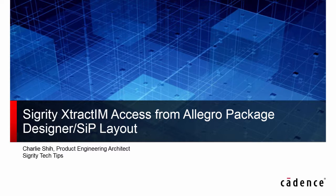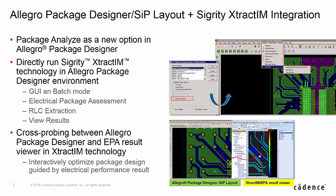In this video, we are going to introduce Sigurd E-Track IM access from Allegro Package Designer and SIP layout. Traditionally, a layout designer sent a package design to an electrical engineer to do SIP analysis for critical nets, waiting days to weeks to get a response for design changes. Now, starting from Allegro 17.2, layout designers can access Sigurd E-Track IM from APD. The EPA results from E-Track IM can provide layout engineers comprehensive electrical information to design better packages.